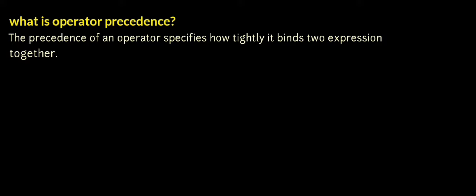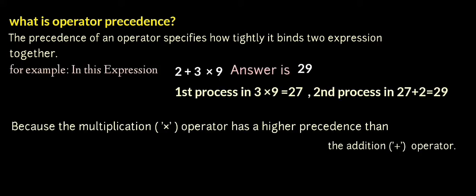What is operator precedence? The precedence of an operator specifies how tightly it binds two expressions together. Operators with high priority are evaluated before those with low priority. For example, in the expression 2 plus 3 into 9, the answer is 29. First, 3 into 9 equals 27, then 27 plus 2 equals 29, because the multiplication operator has higher precedence than the addition operator.